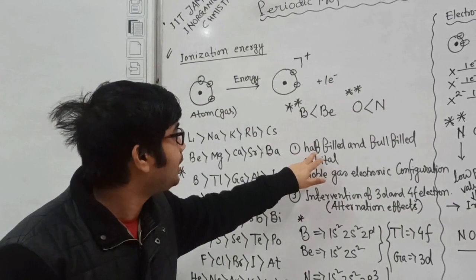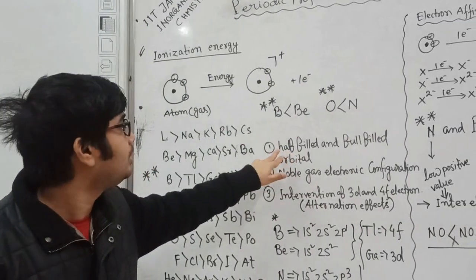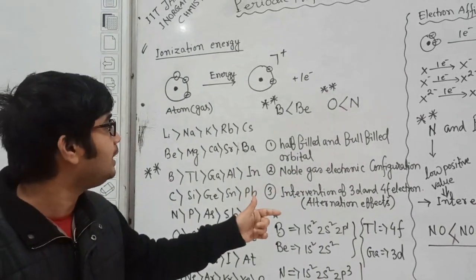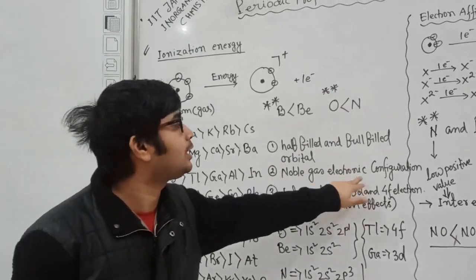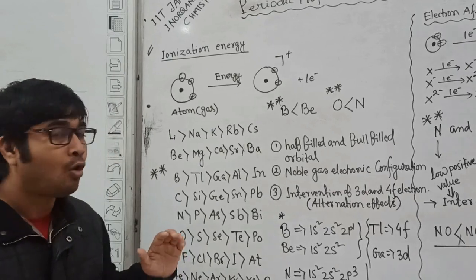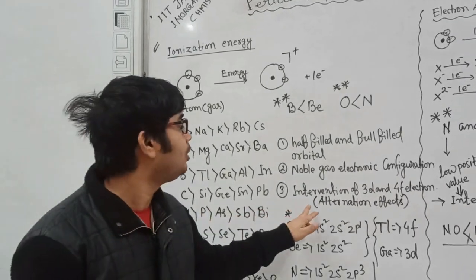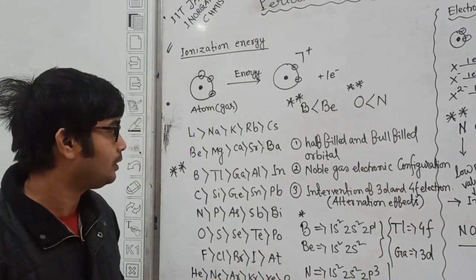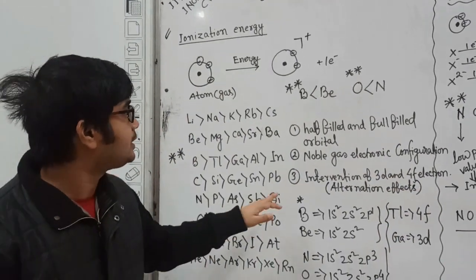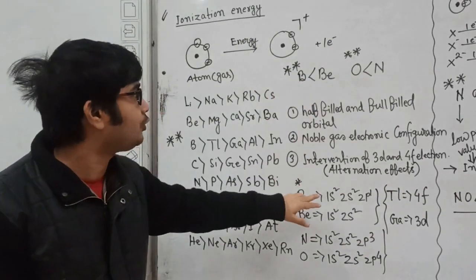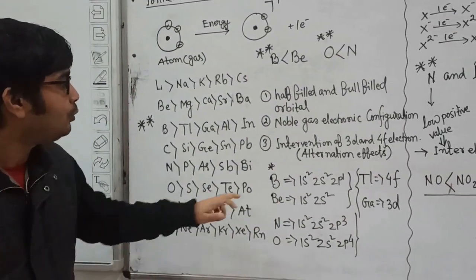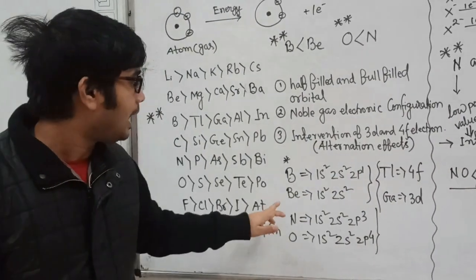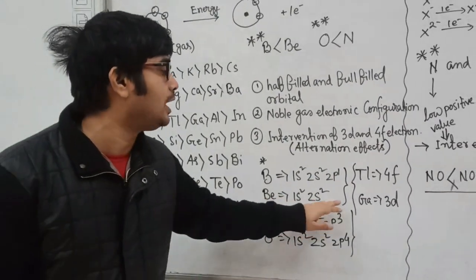You need to consider whether the electrons you are removing are from half-filled or fully-filled orbitals, whether you are removing an electron from a noble gas electronic configuration, or whether there are 3d or 4f electrons present. Let's consider the electronic configurations of boron and beryllium.